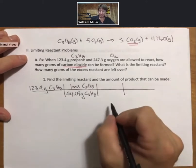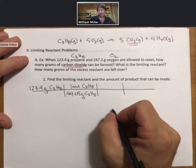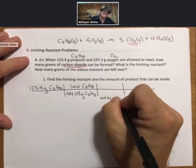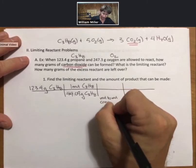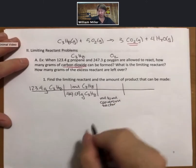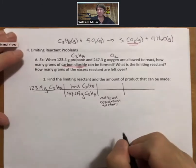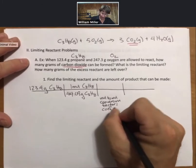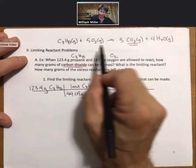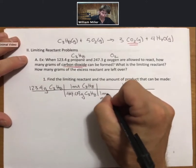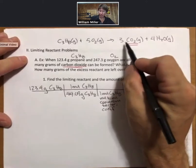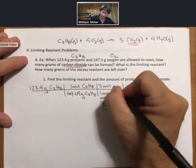And a mole-to-mole conversion factor always involves coefficients. What I mean by that is the reaction tells us that for every one mole of propane, there are three moles of carbon dioxide that are produced.